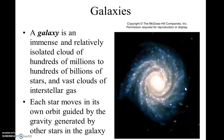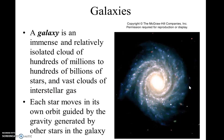In our part of the universe, the nearest large galaxy is two and a half million light years away. Think about that: if this galaxy was the Milky Way, the diameter is about a hundred thousand light years. So ten of those would be a million light years, and 25 of these diameters would get you to the next spiral galaxy over.